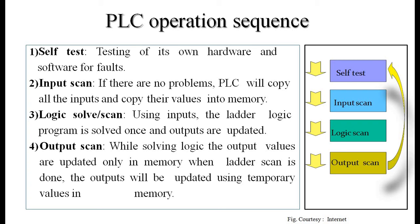Then comes the input scan. If there is no problem, the PLC copies all the inputs and saves their values into memory. Once it finds no fault with hardware and software, it will go for the next step — input scan. It scans all connected inputs, and whatever the values of the inputs — high or low — are copied and saved into memory.